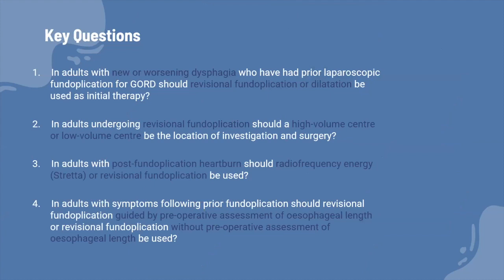Questions two, three, and four had only a few relevant articles from the literature search, so we mainly worked on KQ1: in adults with new or worsening dysphagia who have had a previous fundoplication, should revision fundoplication or pneumatic dilatation be used? Other questions address high-volume versus low-volume centers, whether to use Stretta or redo fundoplication for post-fundoplication heartburn, and whether to assess esophageal length before revision fundoplication.